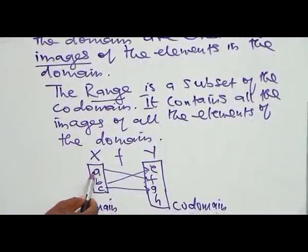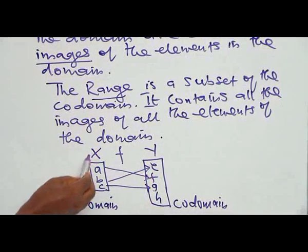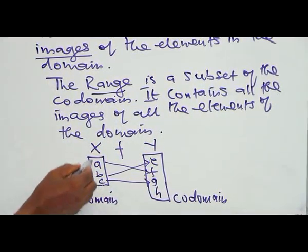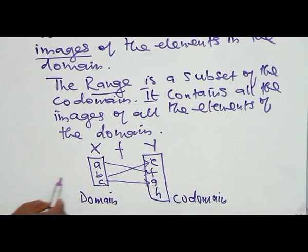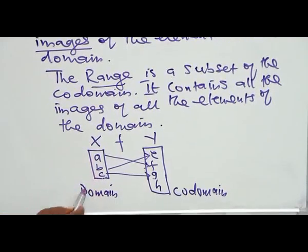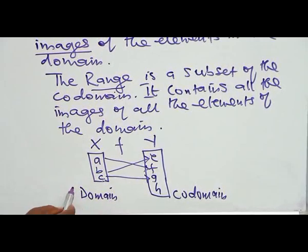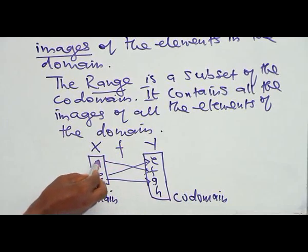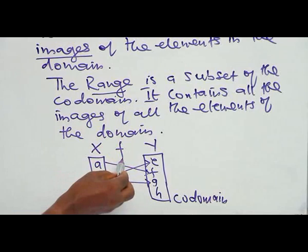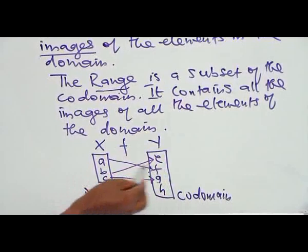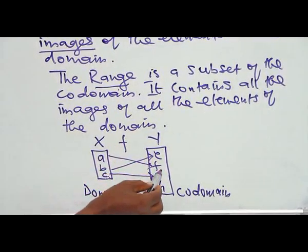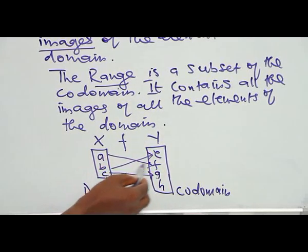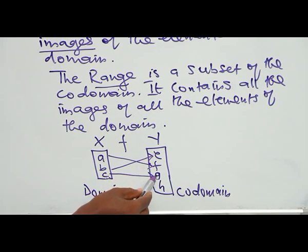Let us illustrate this with a diagram. Here is a set S and another set Y. Set S contains elements A, B, and C — this is the domain. Set Y is the co-domain. We take an element in S, perform some operation (the function), and get a result in the co-domain. So if you take A, you get value F; take B, you get E; take C, you get G.